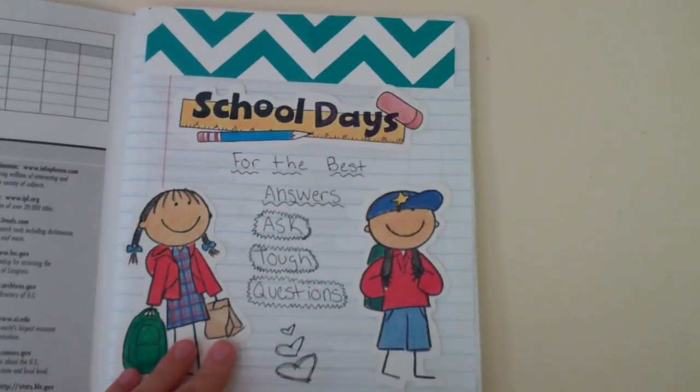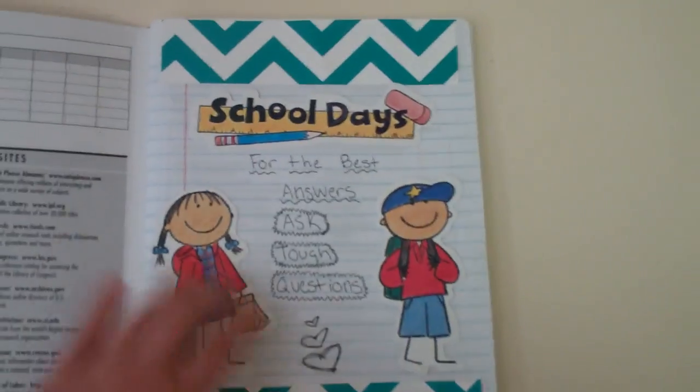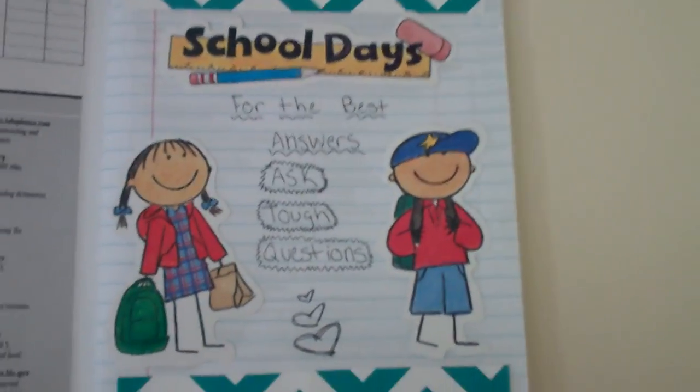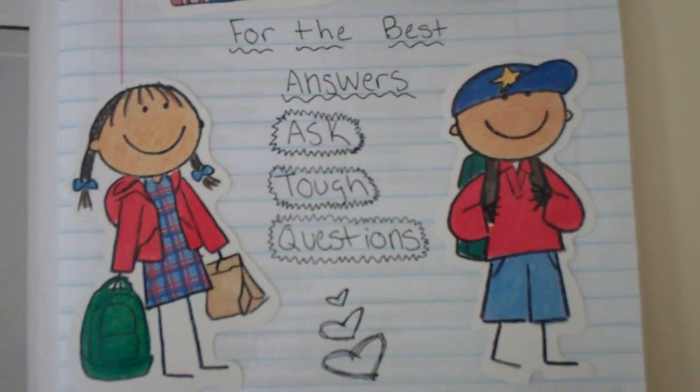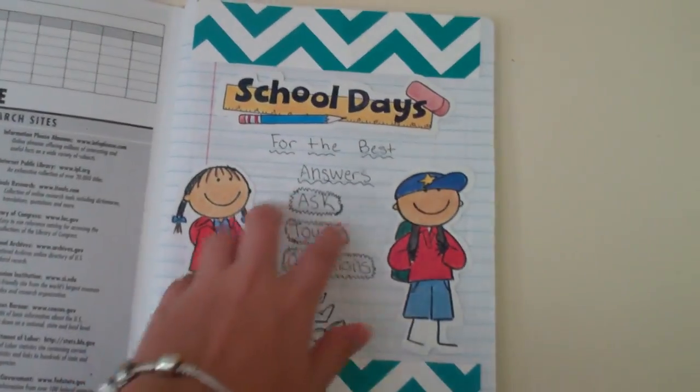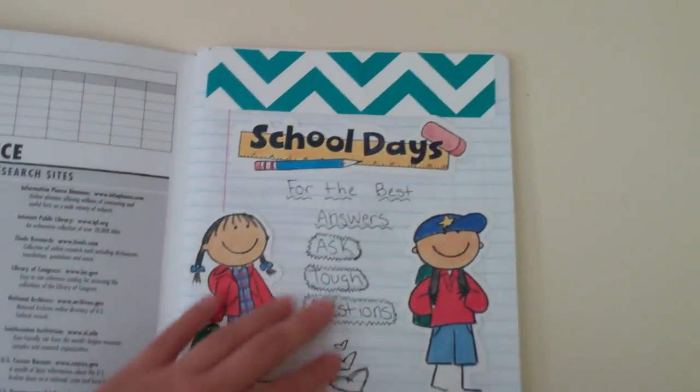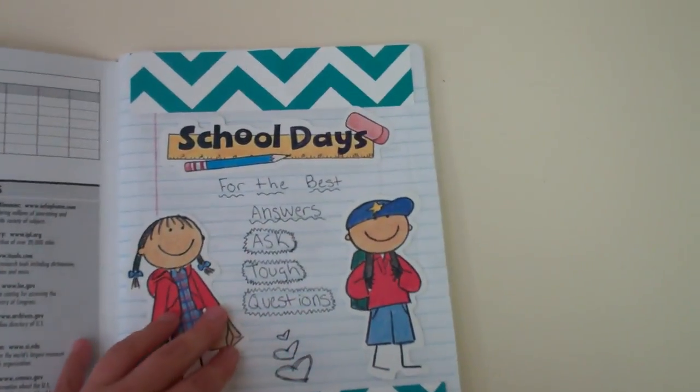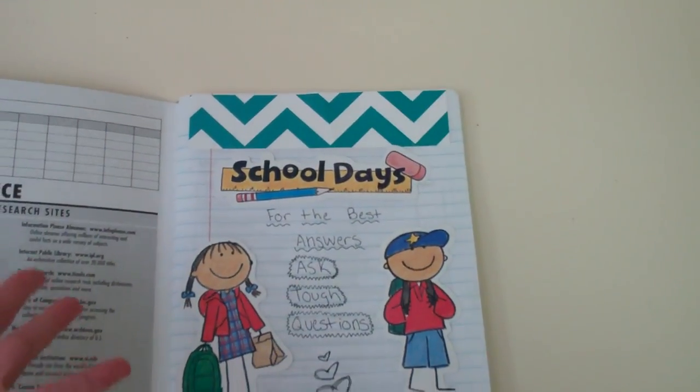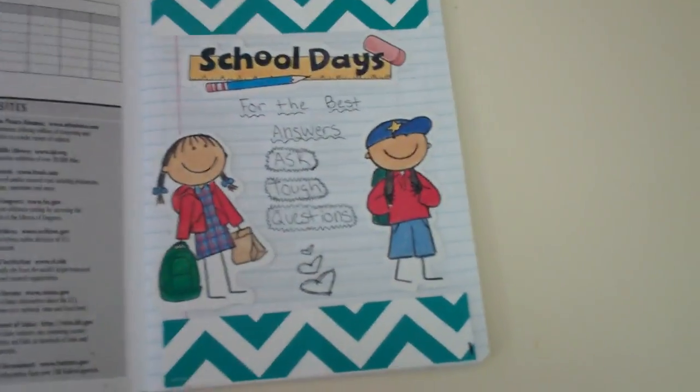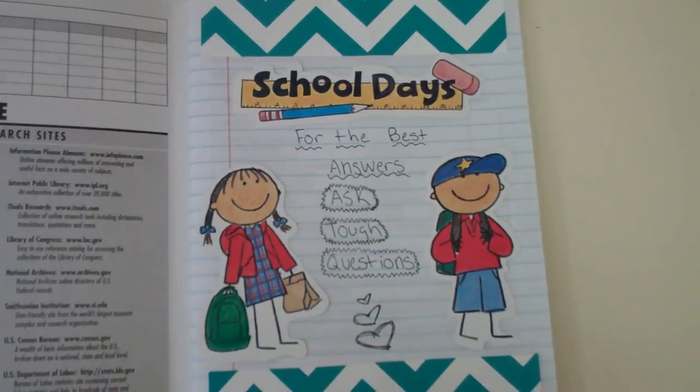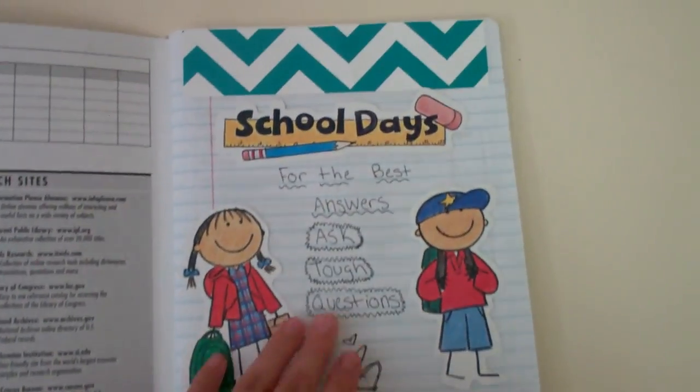Page number one then here is your cover page. So you can decorate this however you want. I had more of the chevron stuff so I added that. I put a quote here that I like, for the best answers ask tough questions. Put these little kids on here, school stuff. So I'm a teacher, so that reflects my personality. My book does in general. I want you to make your book reflect your personality. So if you want to put a quote here, if you want to put more pictures, however you want to do it, that's your cover page, but it does need to be decorated.